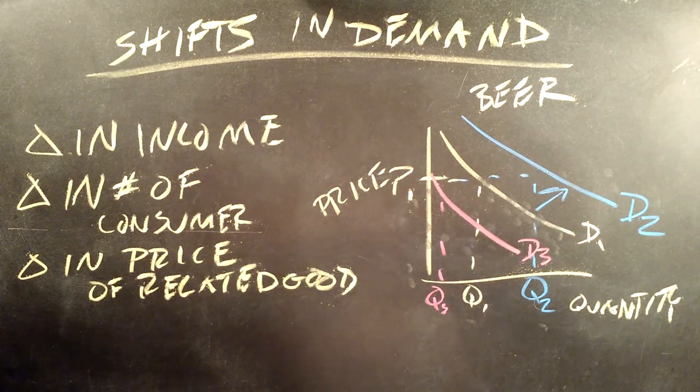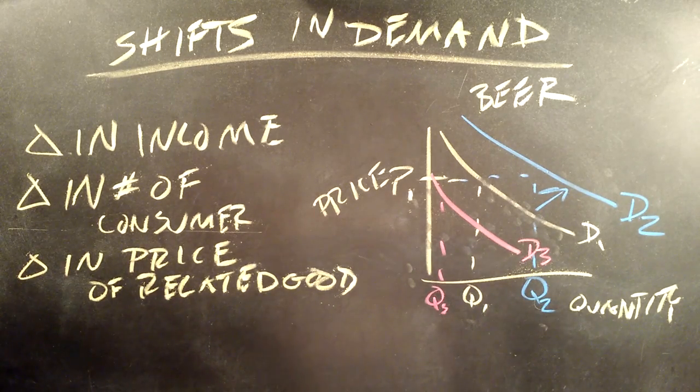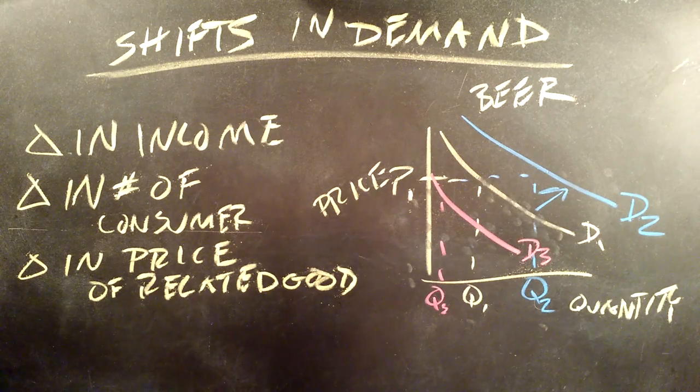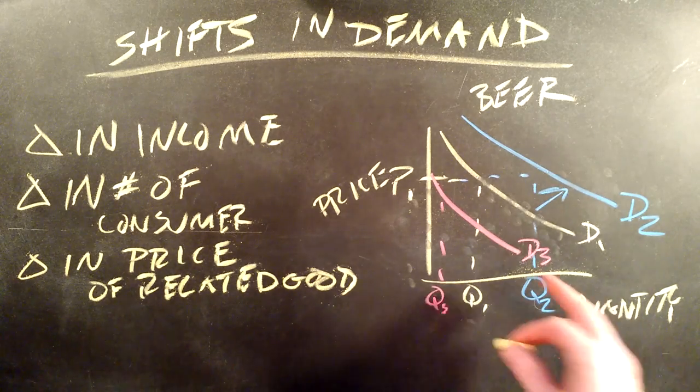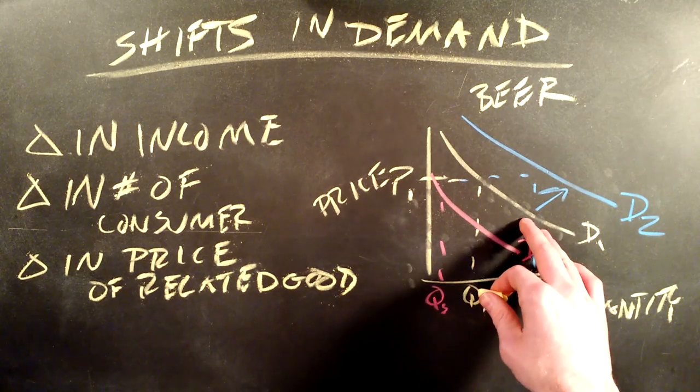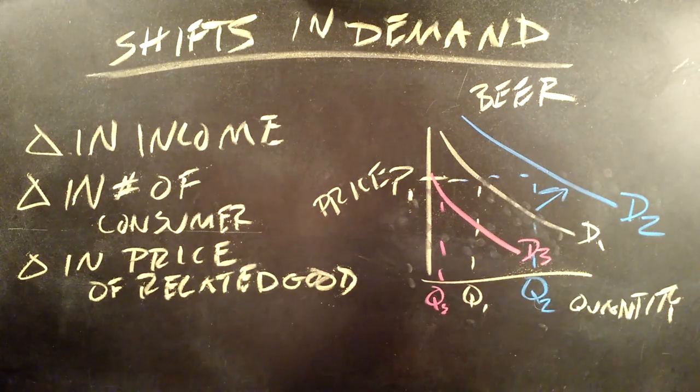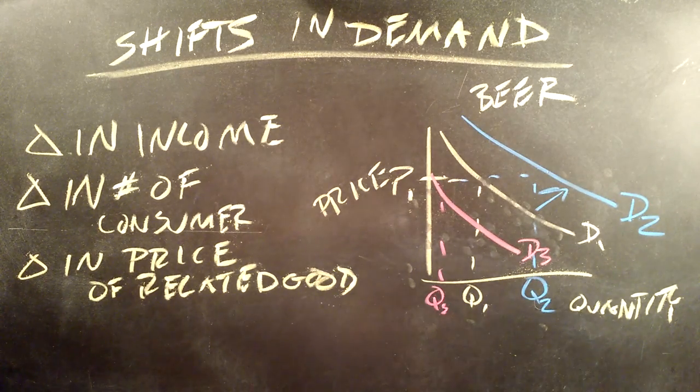Another related good in this case is that of complements. So a good example is hot dogs and hot dog buns. So if we saw the price of hot dogs go up, we would see a decrease in demand for hot dog buns. If the price of hot dogs went down, we would see an increase in the demand for hot dog buns as these two goods are consumed together.